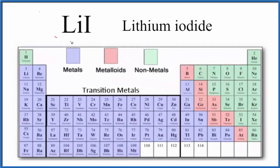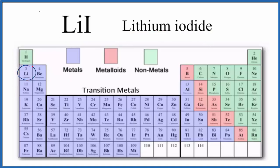Let's take a look at whether LiI, that's lithium iodide, is ionic or covalent. First off, if we look up lithium, lithium is a metal. Iodine, right here, that's a non-metal. So when we have a metal and a non-metal, we're thinking that we have an ionic compound.